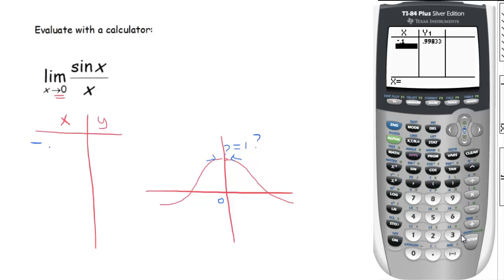When I plug in negative 0.1, the output is 0.9983. Let's try one even closer. Let's get even closer to 0. Negative 0.01 yields an output of 0.99949s and then an 8.